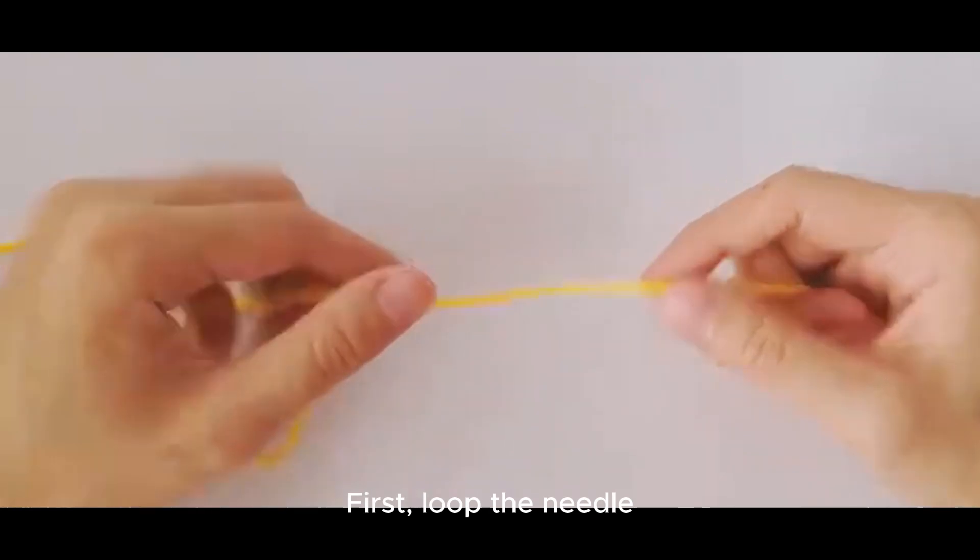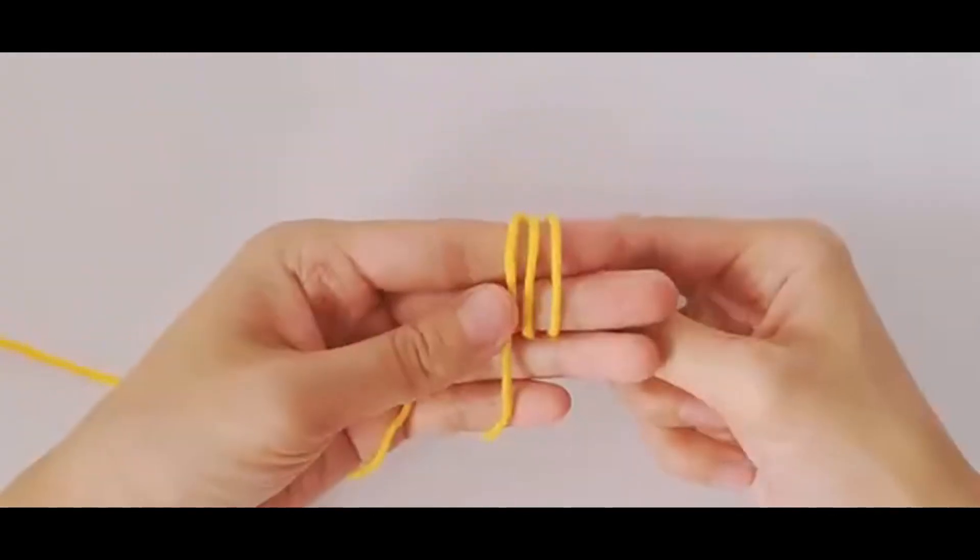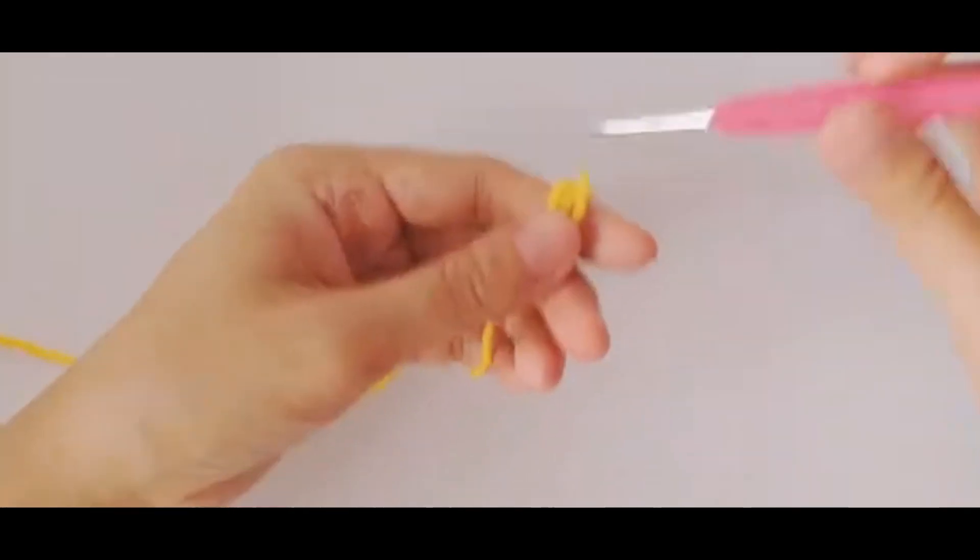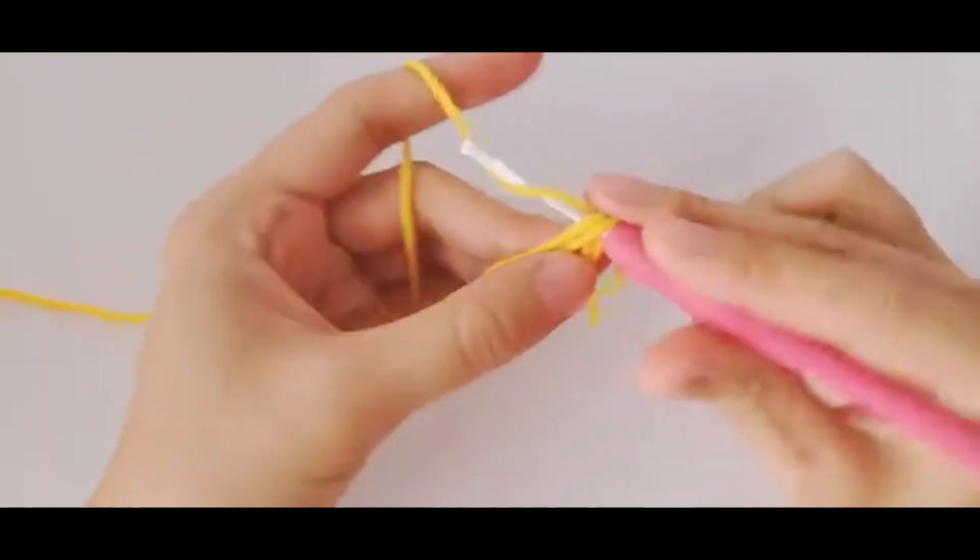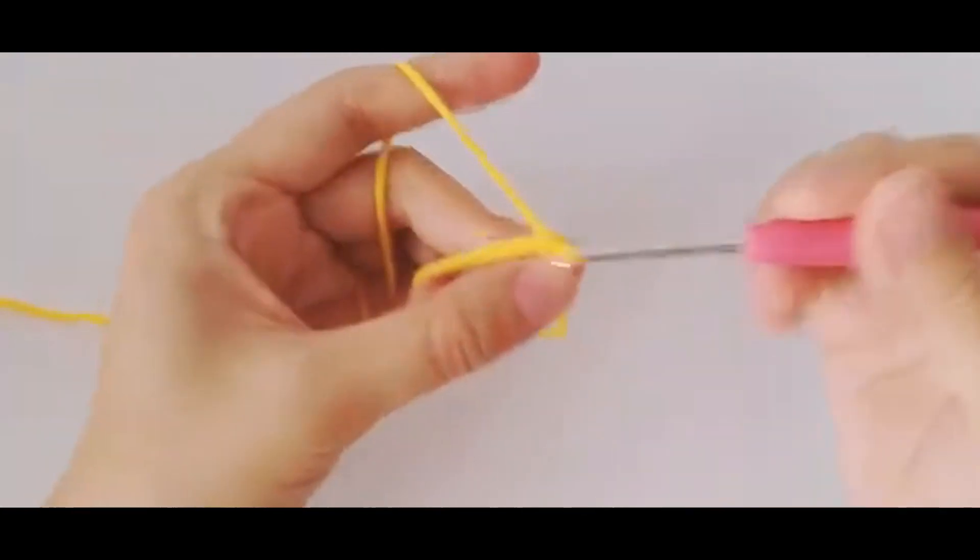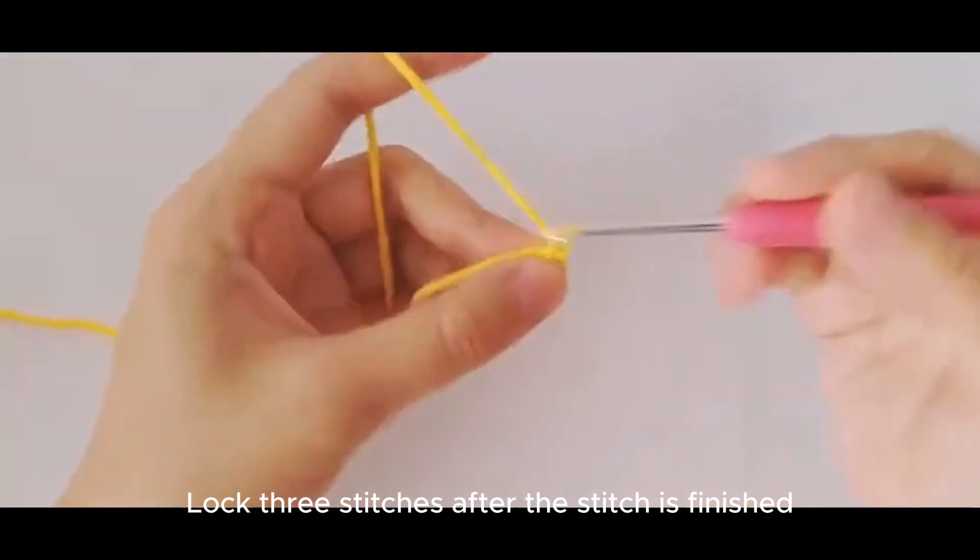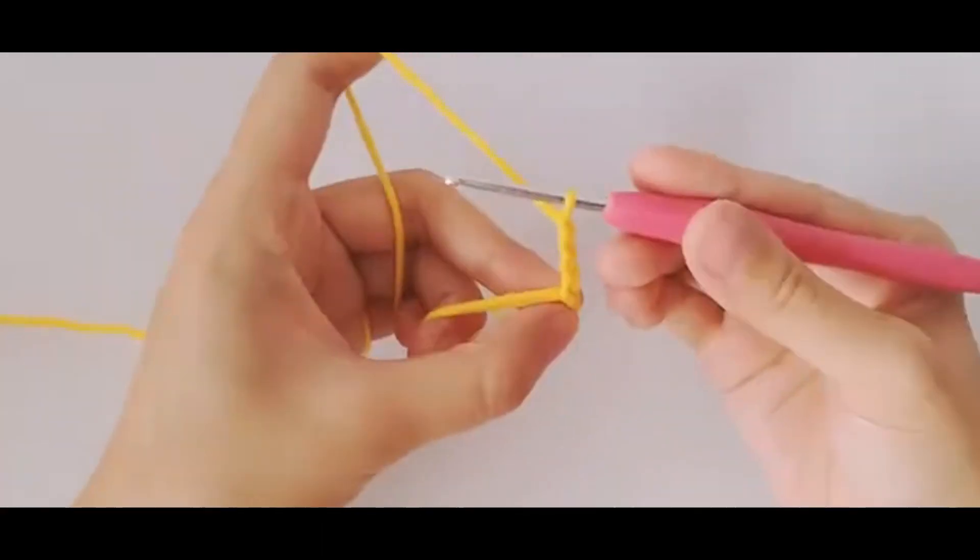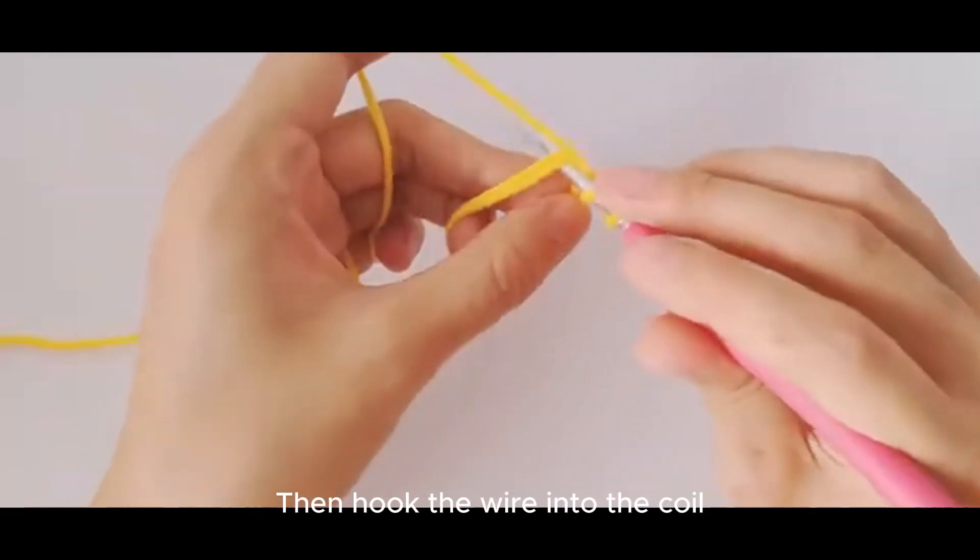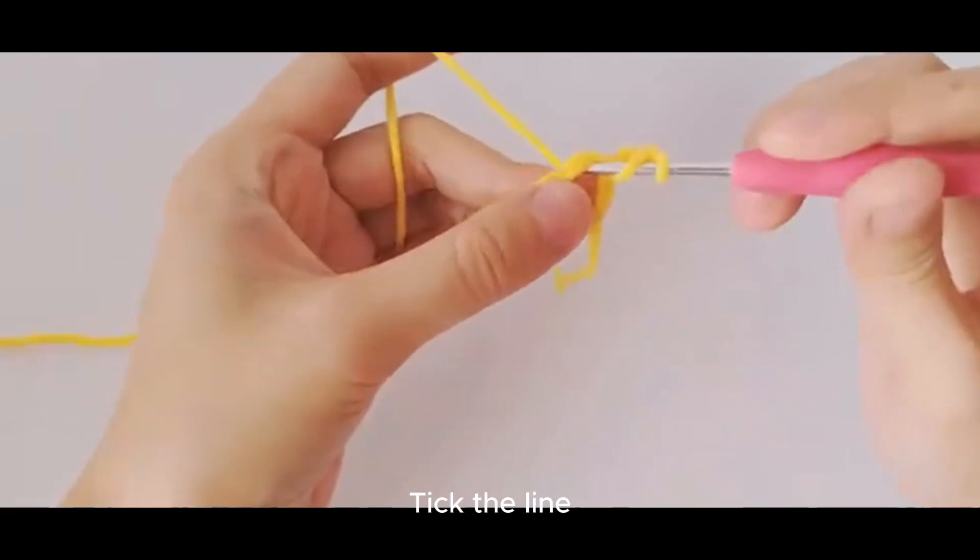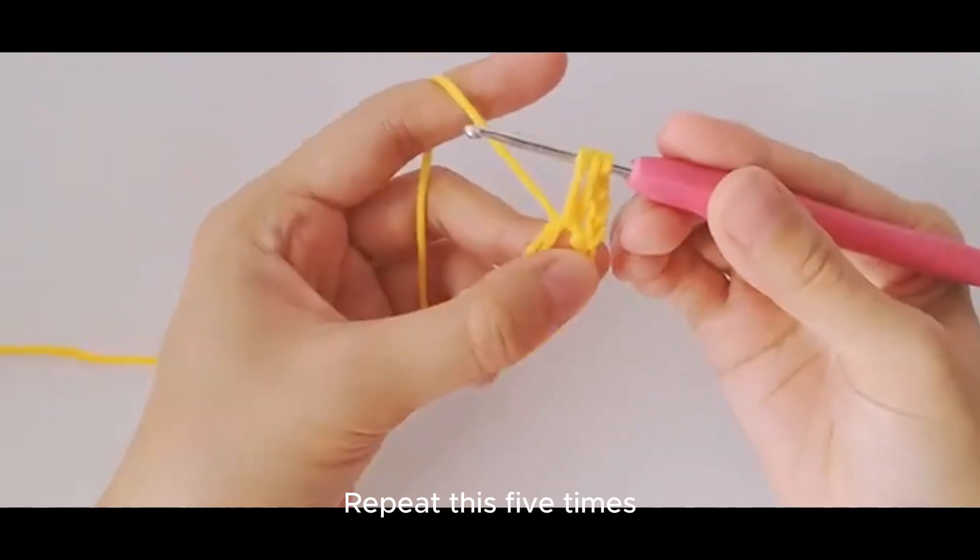First loop the needle. Lock three stitches after the stitch is finished. Then hook the wire into the coil. Tick the line. Repeat this five times.